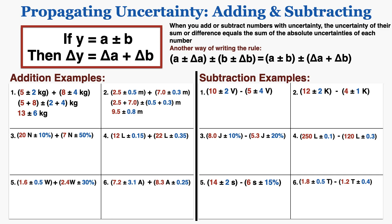In problem number 3, we have an issue because those uncertainties are not absolute uncertainties, and I need them to be absolute uncertainties to follow the rule. So before I can add these, I need to convert them from percent uncertainties to absolute uncertainties. To do that, I multiply the percentage as a decimal by the original number. Once I have those absolute uncertainties, I can add them together using the rule and get the result.